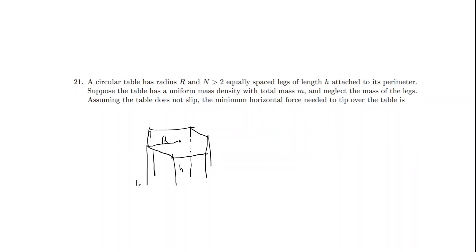We're essentially looking for how to get the net torque equal to zero, so that just barely increasing the force will cause it to tip over. We're looking for tipping over, so we're actually looking for torque. We are going to measure torque about the axis through these two legs. Why? Just think about how the table will move — we want to tip it over and it will pivot on two legs.